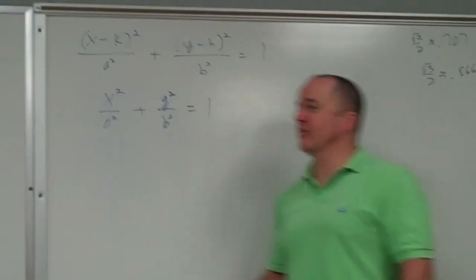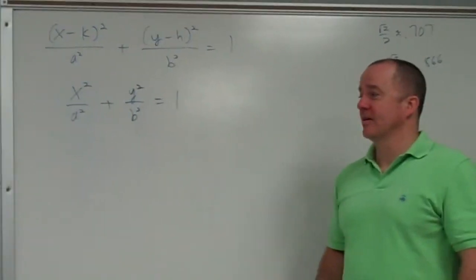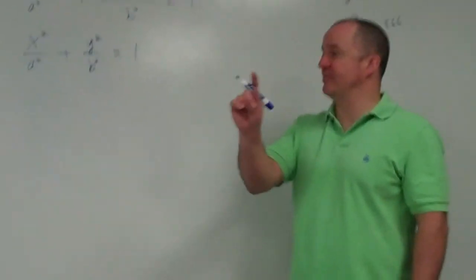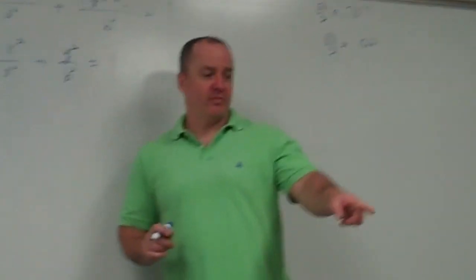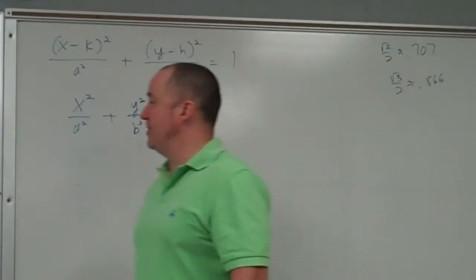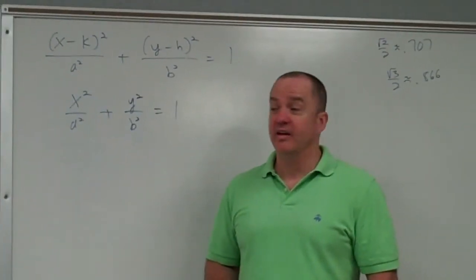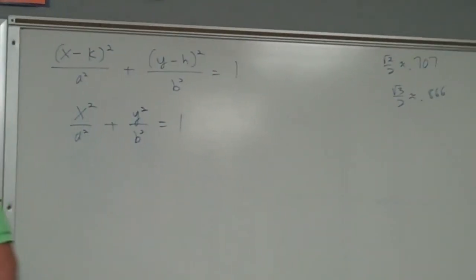Y squared over b squared equals 1. Do we know either a or b? Not, yes. Okay, Sam thinks who knows 1. Sam, don't answer this part next. Amy says it's b. We do know b. What is b equal to? 5. Because over here, it went up 5.